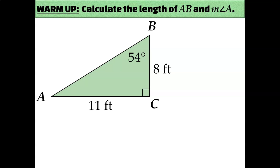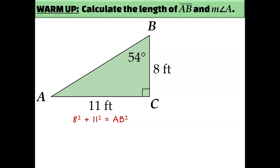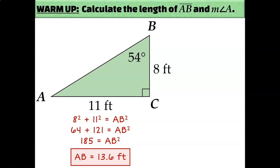For example, could you figure out the length of AB? Since this is a right triangle, AB is the hypotenuse — it's the side across from the right angle. I know the lengths of both legs, so I can use the Pythagorean theorem: a squared plus b squared equals c squared. So 8 squared plus 11 squared equals AB squared, which is 64 plus 121, which is 185. Rounding to one decimal place, I get 13.6 feet.